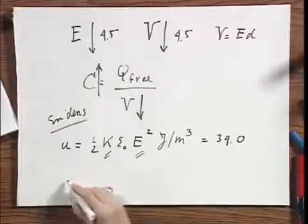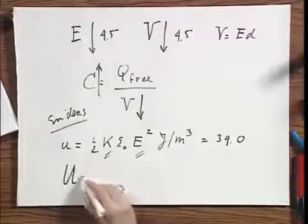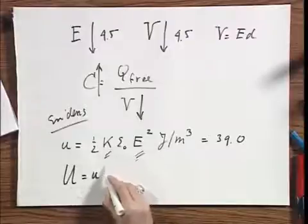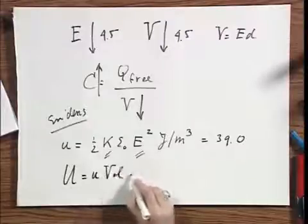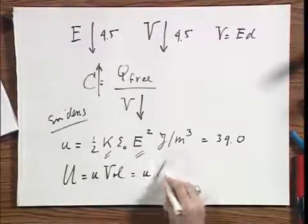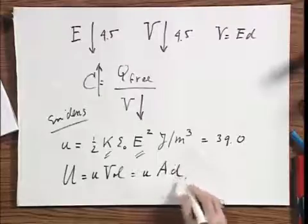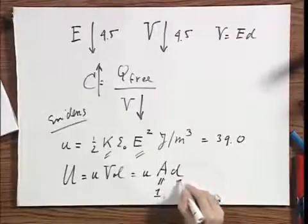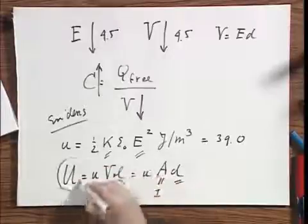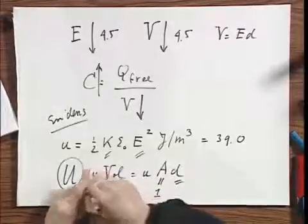Since you know, if you want to know the total u, you have to take the little u times the volume, and that is the little u times the area A times the separation d. This was one meter. You are given d, so you can calculate what the total electric energy is in this system.